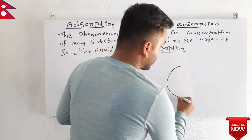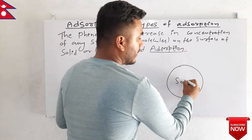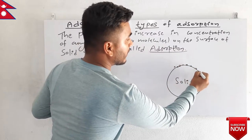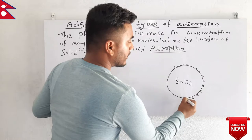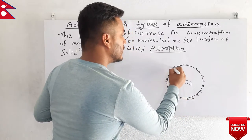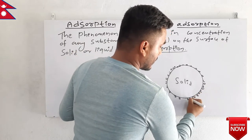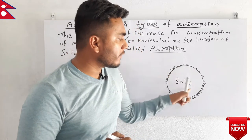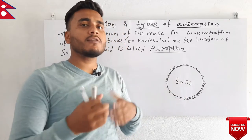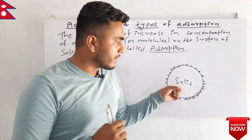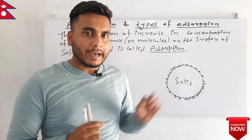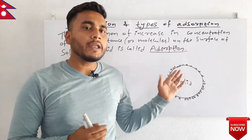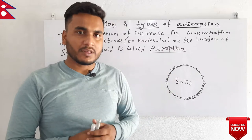Let us understand this by a figure. Suppose this is a solid — by a certain phenomenon, we can see certain gas molecules will stick on its outer surface. They will touch it and stay there. In this phenomenon, the gas molecules are on the surface of the solid and their concentration is constantly increasing, so this phenomenon is called adsorption.